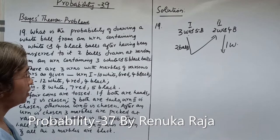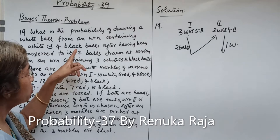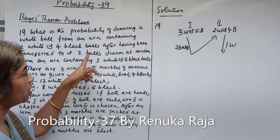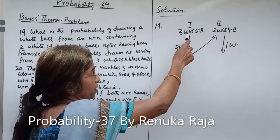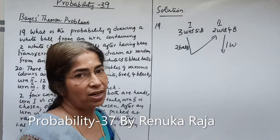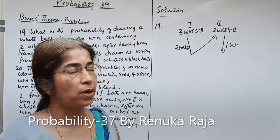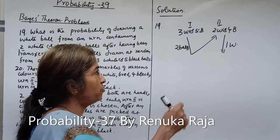What is the probability of drawing a white ball from an urn containing 2 white and 4 black balls, after having 2 balls transferred to it from an urn containing 3 white and 5 black balls? From urn 1 (3 white, 5 black), 2 balls are transferred to urn 2 (2 white, 4 black), and then a white ball is drawn from urn 2. We need to find the probability of this event.